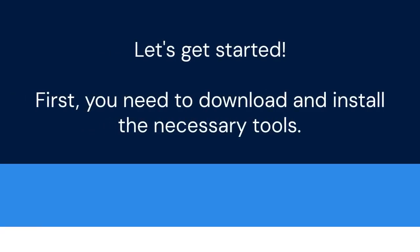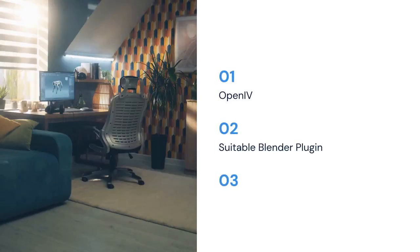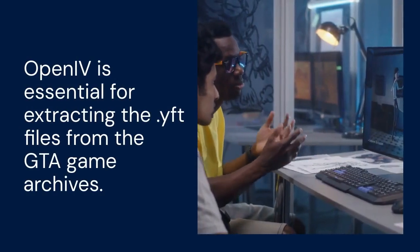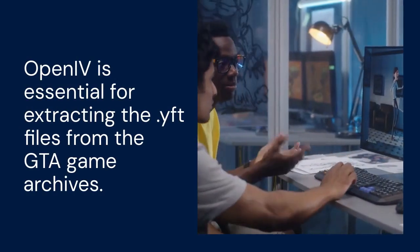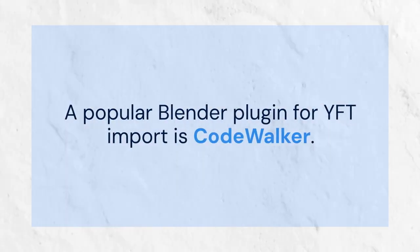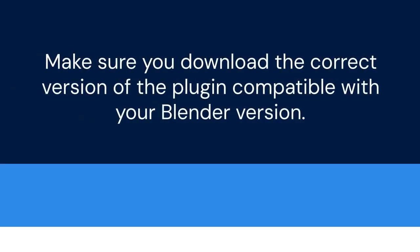First, you need to download and install the necessary tools. This includes OpenIV and a suitable Blender plugin. OpenIV is essential for extracting the .yft files from the GTA game archives. A popular Blender plugin for YFT import is CodeWalker. Make sure you download the correct version of the plugin compatible with your Blender version.